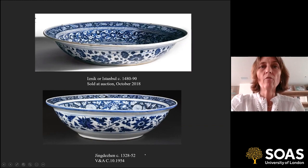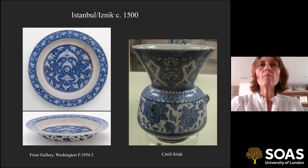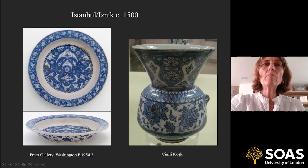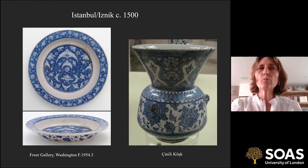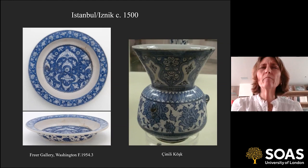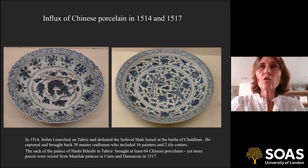These pieces — this bowl and dish — are in a very experimental phase when artists and designers hadn't quite figured out how best to decorate them. They've applied an inscription in a band that's very hard to read because it competes with a floral scroll in the background. Over the next 20 years or so the designs change, the blue becomes a lot paler, and the relationship with any Chinese prototype becomes still more remote.